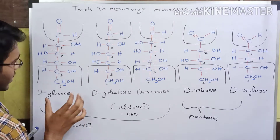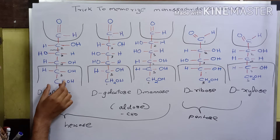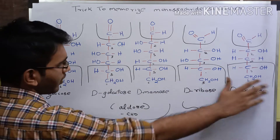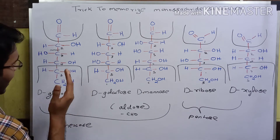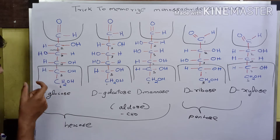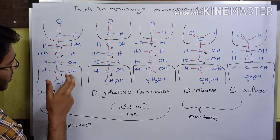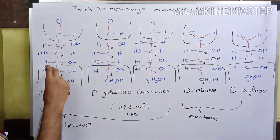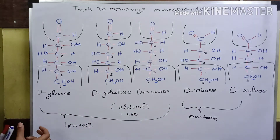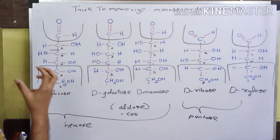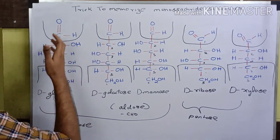If you see clearly in these structures, you can notice that the terminal carbon atom and the carbon atom attached to it are the same throughout all 5 structures. The terminal carbon atom has the hydroxyl group on the right hand side and hydrogen on the left hand side. This is because of the D conformation. If it is L conformation, the hydroxyl group will be on the left hand side and H on the right hand side. So the last 2 carbon atoms are the same throughout all 5 molecules.